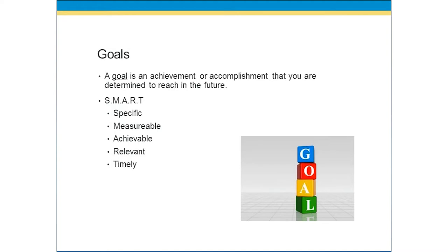Let's take a look at goals. A goal is an achievement or an accomplishment that you are determined to reach in the future. Goals should be SMART — an acronym. Specific: your goals should be very specific. Second, they should be measurable, meaning you should be able to measure them and have indicators of progress along the way — you'll know when they are achieved. A stands for achievable: a SMART goal is something that you can achieve, not something you can't. R stands for relevant: it should be relevant to what you're trying to accomplish. And finally, it should be timely or time-bound, meaning it has a deadline for when you want to accomplish it.